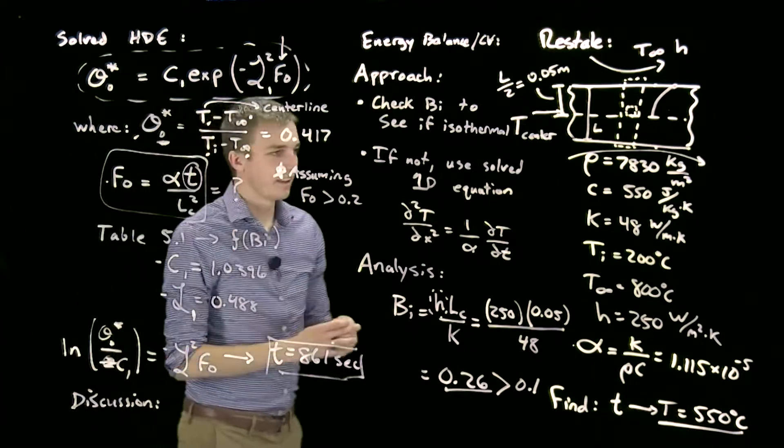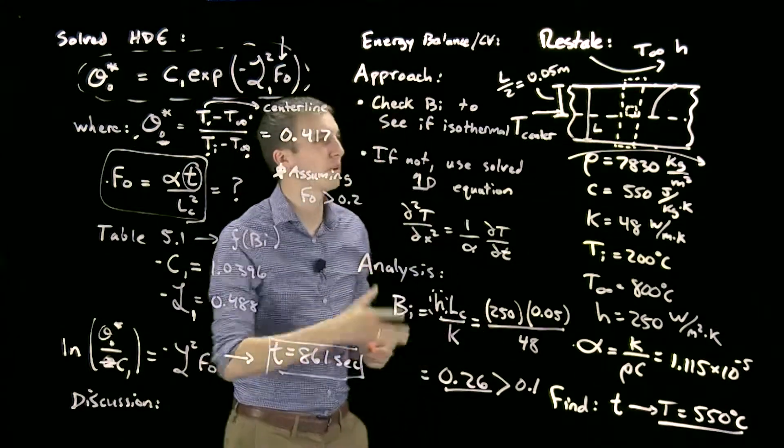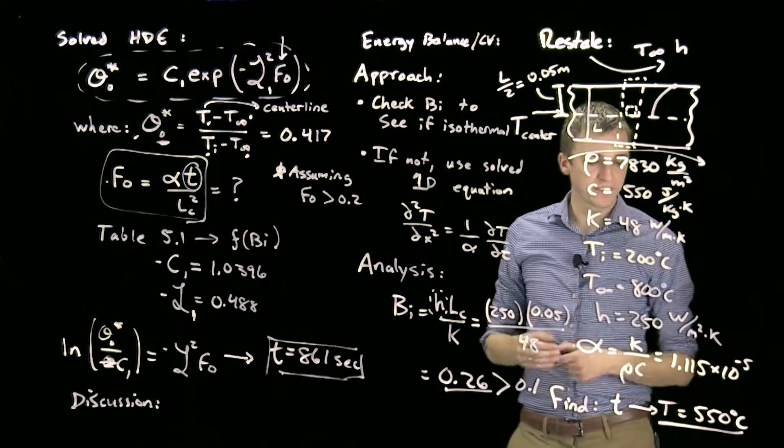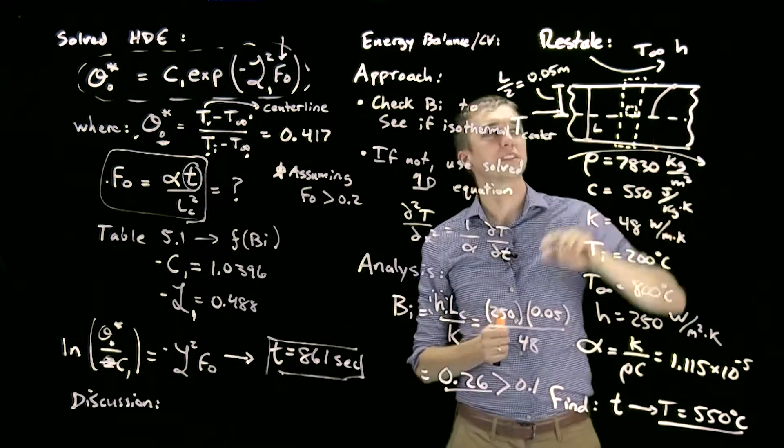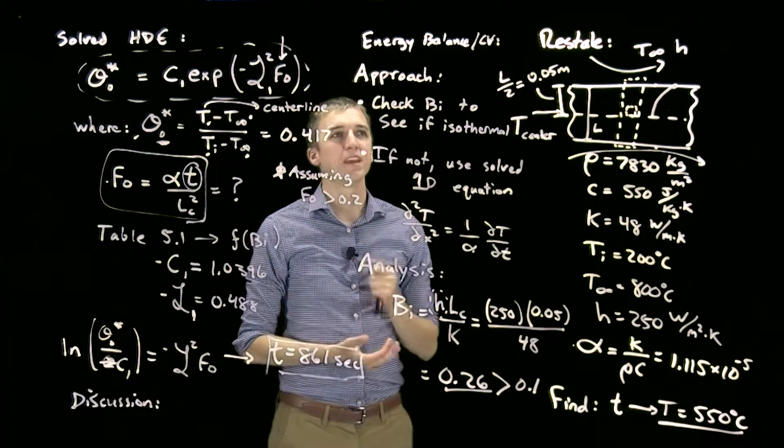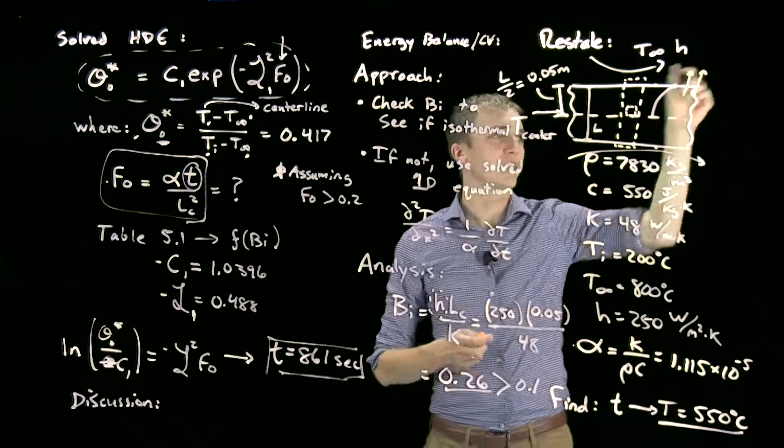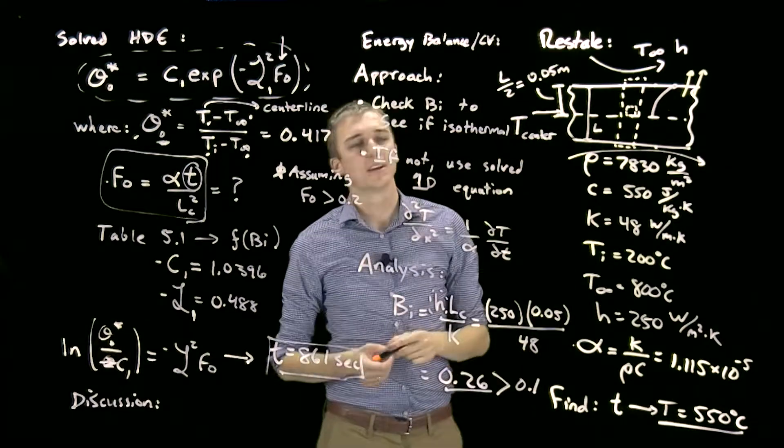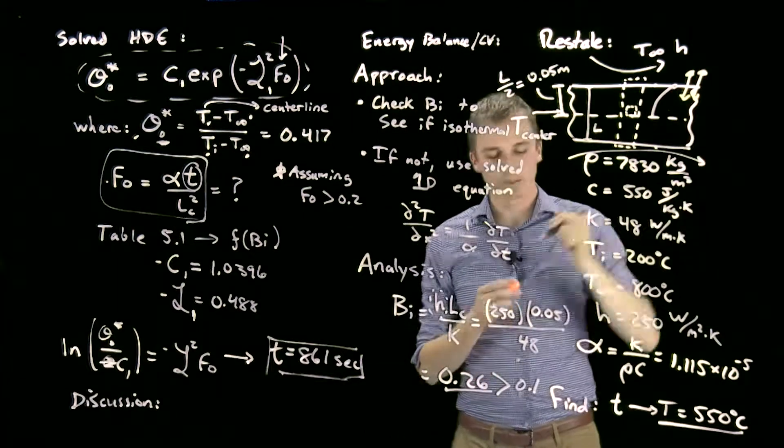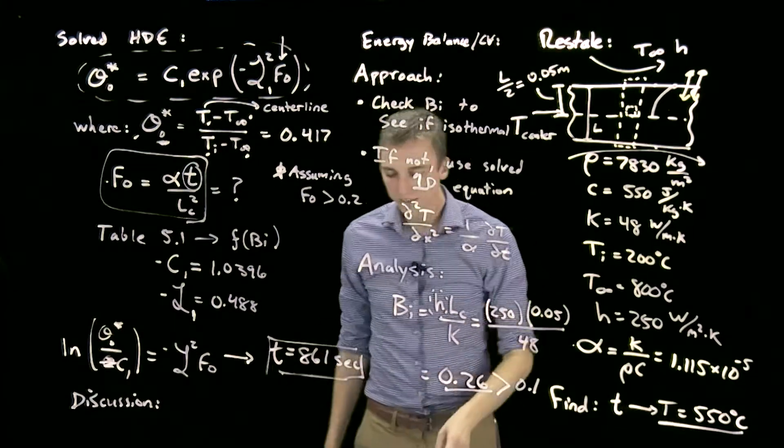As a discussion point, I'll just talk about this. In this equation, in this approach, you notice that we neglected radiation. We said, well, we only have convection. However, at a temperature of 550°C—that's the centerline, we don't know what the surface temperature is, we could find it, I'm sure it's significant—radiation heat transfer would be substantial. But in this case, what that would do is have additional heat—we'd have convection and radiation—which means it would take less time to heat our surface to this temperature. So this is a conservative estimate by neglecting radiation.